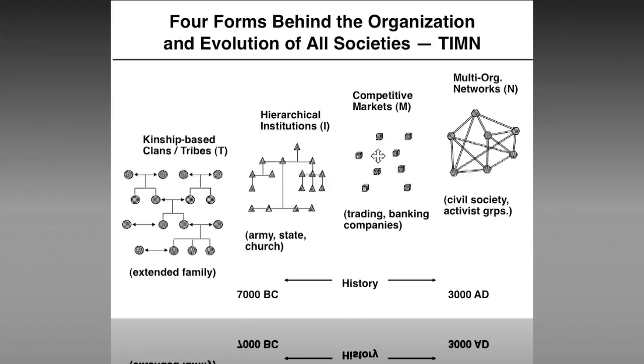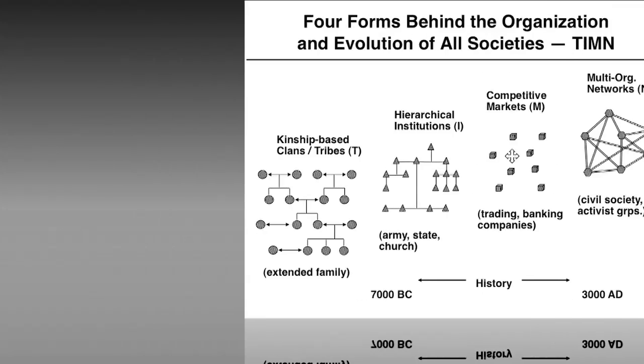Many academics define institutions much more broadly to include any sort of repeated pattern of activity — marriage becomes an institution. But I'm using the definition that refers to hierarchical organizations. Economists and others pretty much conflate markets and capitalism — you talk about one, you mean the other. But in this framework, it's about markets. Capitalism is a particular way of approaching markets.